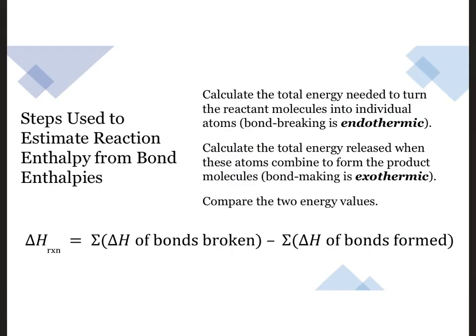First, we have to calculate the total energy that would be added to turn the reactant molecules into individual atoms since bond breaking is endothermic. Next, we calculate the total energy that would be released when these atoms combine to form the product molecules. Bond making is exothermic. Finally, we find the difference between the two quantities to estimate the reaction enthalpy, delta H.